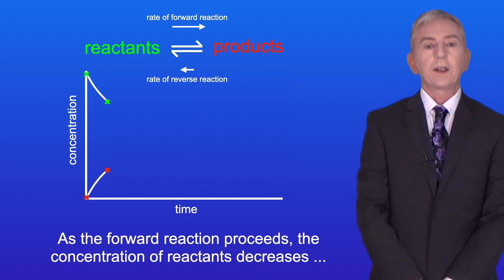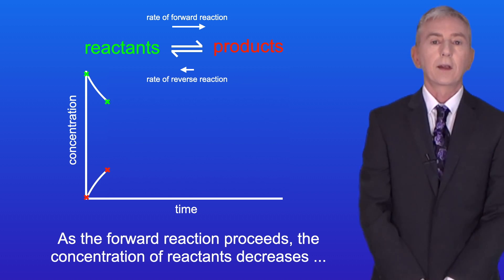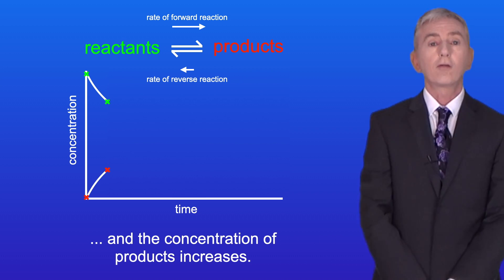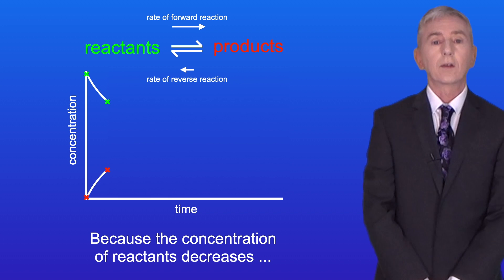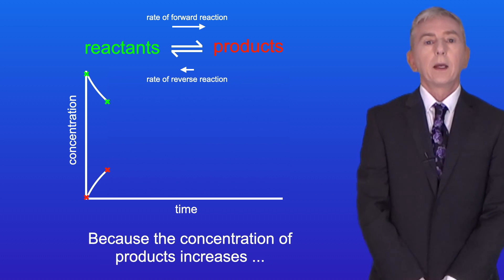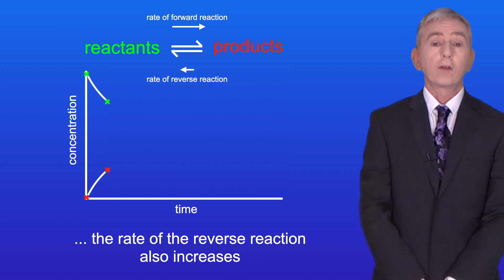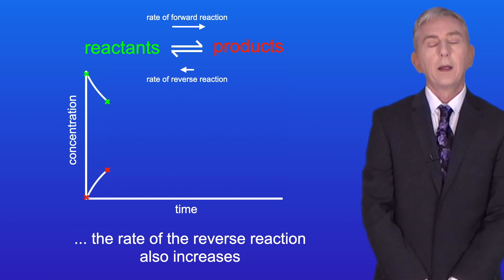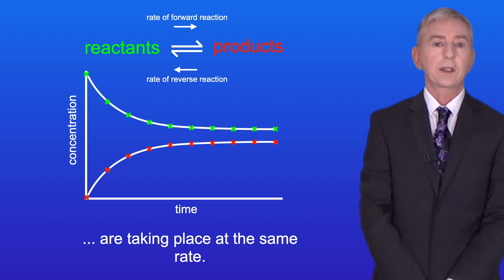As the forward reaction proceeds, the concentration of reactants decreases and the concentration of products increases. Because the concentration of reactants decreases, the rate of the forward reaction also decreases. And because the concentration of products increases, the rate of the reverse reaction also increases. Eventually, there comes a point when both the forward and reverse reactions are taking place at the same rate.